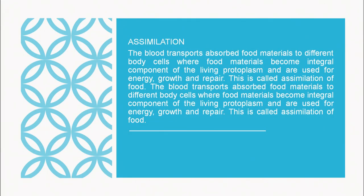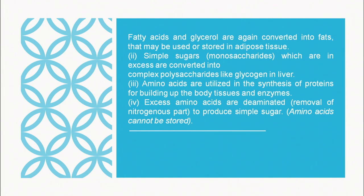In assimilation, the blood transports the absorbed food material to different body cells, where the food material becomes the integral component of the living protoplasm and is used for energy, growth, and repair. Fatty acids and glycerol are converted back into fats, which may be used or stored in adipose tissue. Simple sugars in excess are converted into complex polysaccharides like glycogen and stored in the liver.